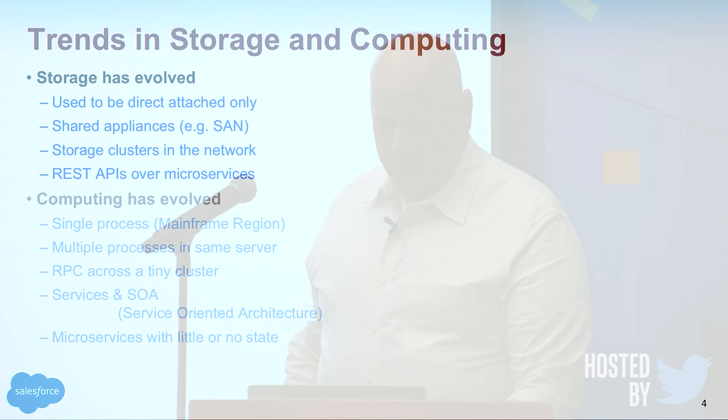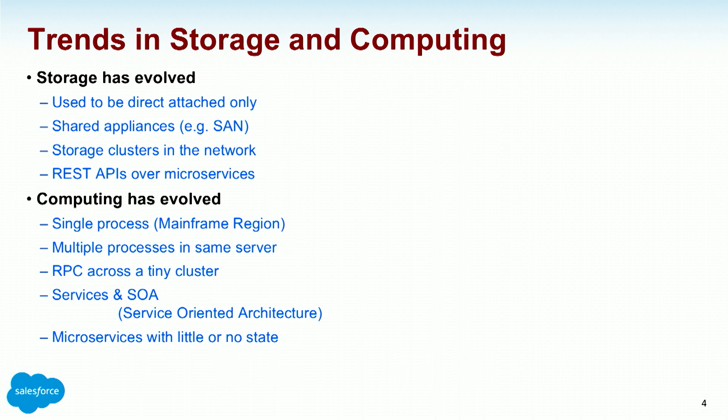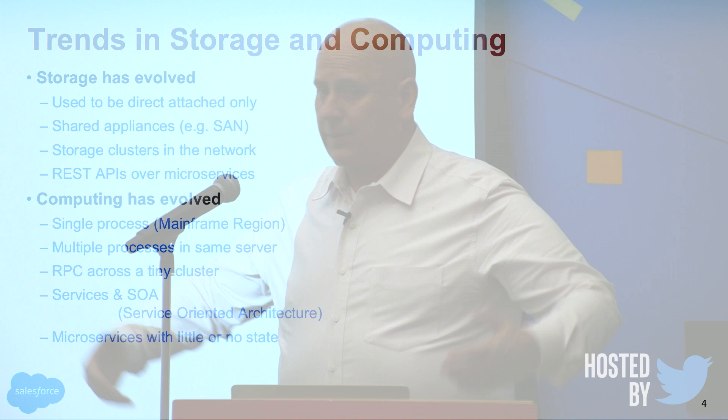Computing has evolved. Back in the day, there was a single process, a single mainframe region. Then you got multiple processes in the same server. Then RPC across a tiny cluster. Services and service-oriented architecture — I was the first one I know of talking about what I called a fiefdom, a protected environment with its own data where you would call into the app and it would do the data stuff. That's today a service-oriented architecture, which evolved — or devolved — to microservices.